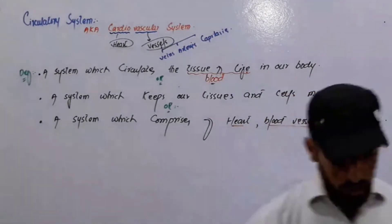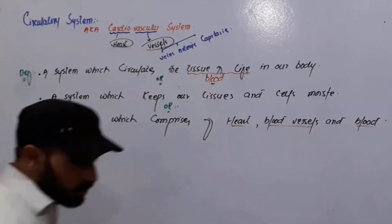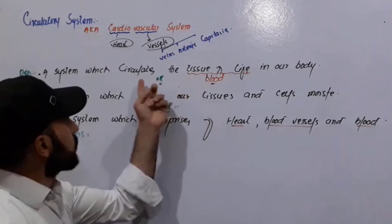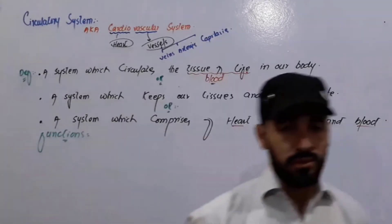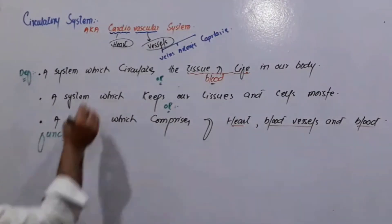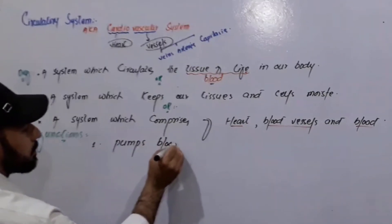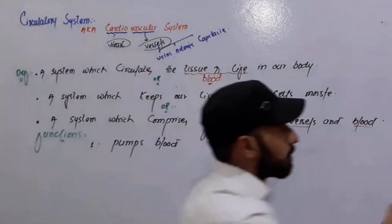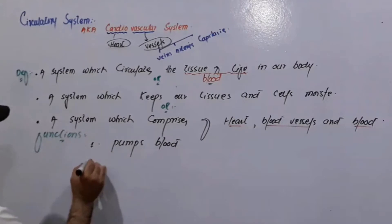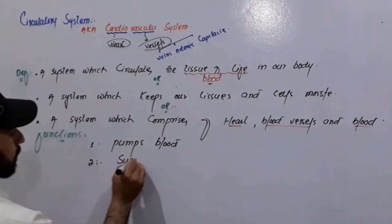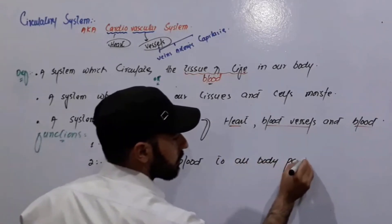Next, we will discuss the functions of this system. Not only does it circulate the tissue of life and keep our tissues moist — it performs many other functions. The first function is that it pumps the blood. Whenever blood comes to the heart, the heart contracts and pumps blood to the upper and lower parts of the body. This system is also responsible for the supply of blood to all body parts.